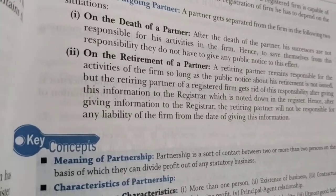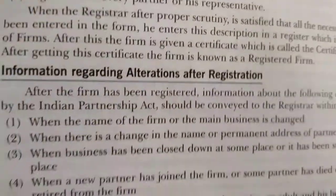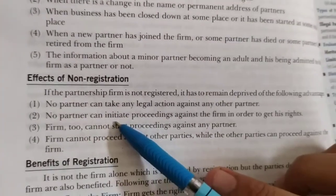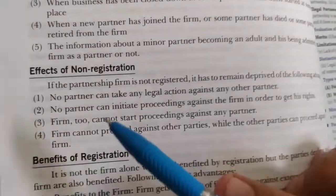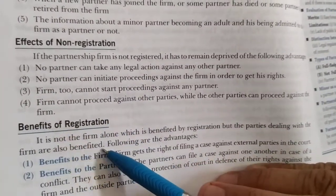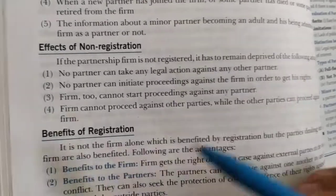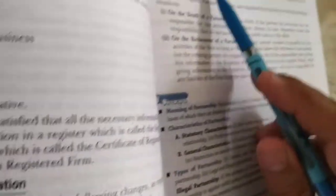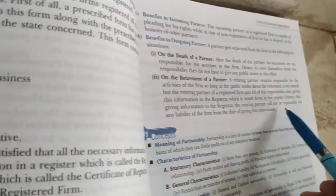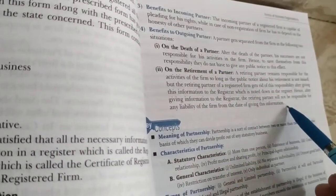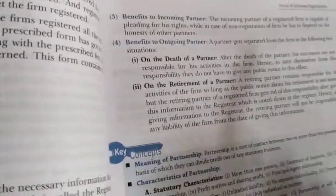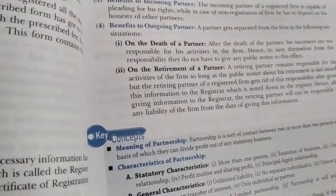Firm का registration नहीं कराते हैं तो सभी को — partner को, firm को — loss और risk होता है. लेकिन partnership का registration कराते हैं तो firm को, partner को, आने वाले partner को, retiring partner को, और death of partner — सभी को advantage होता है. So, firm registered is beneficial for all parties. Thank you.